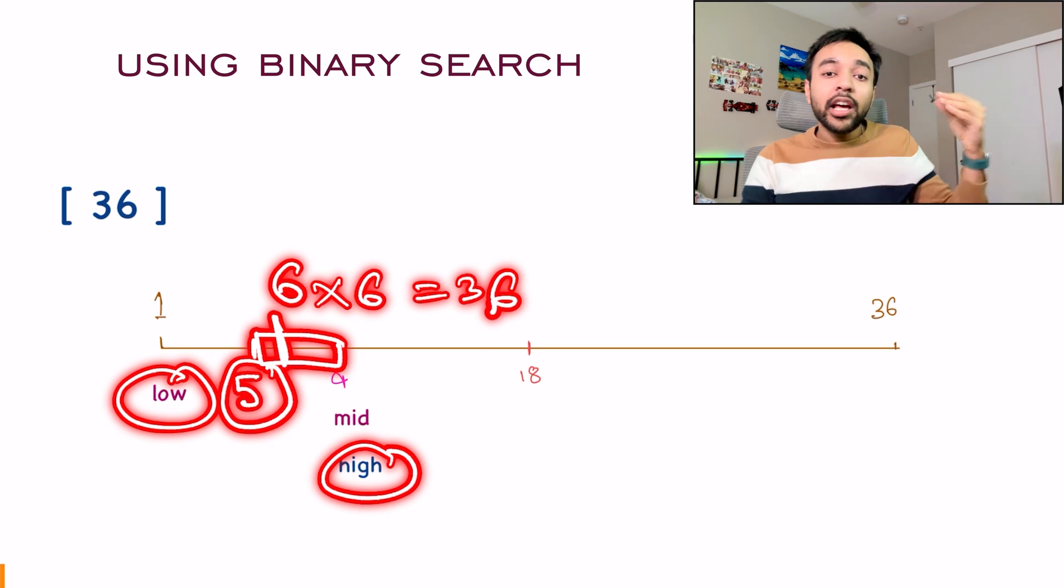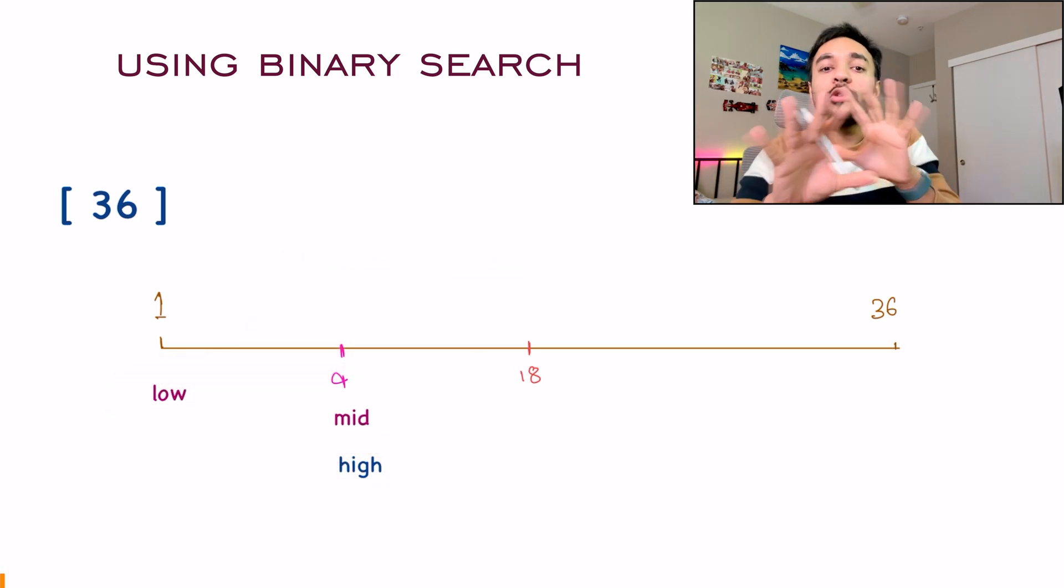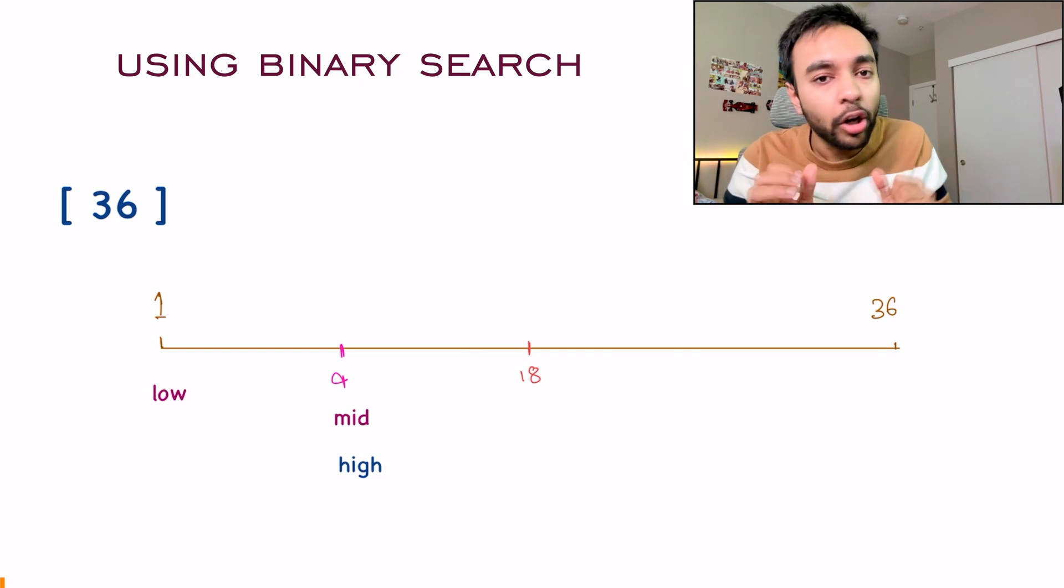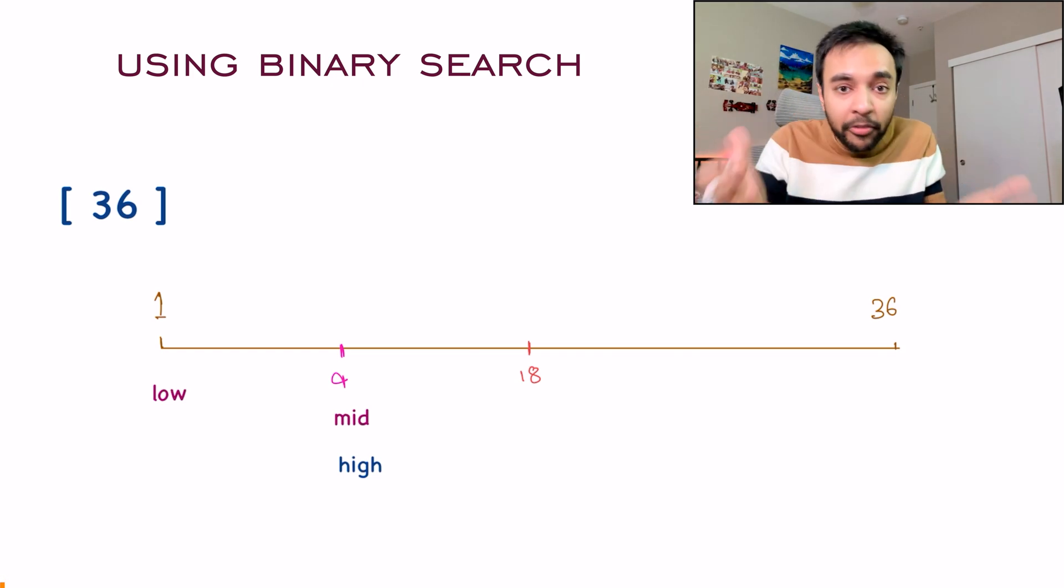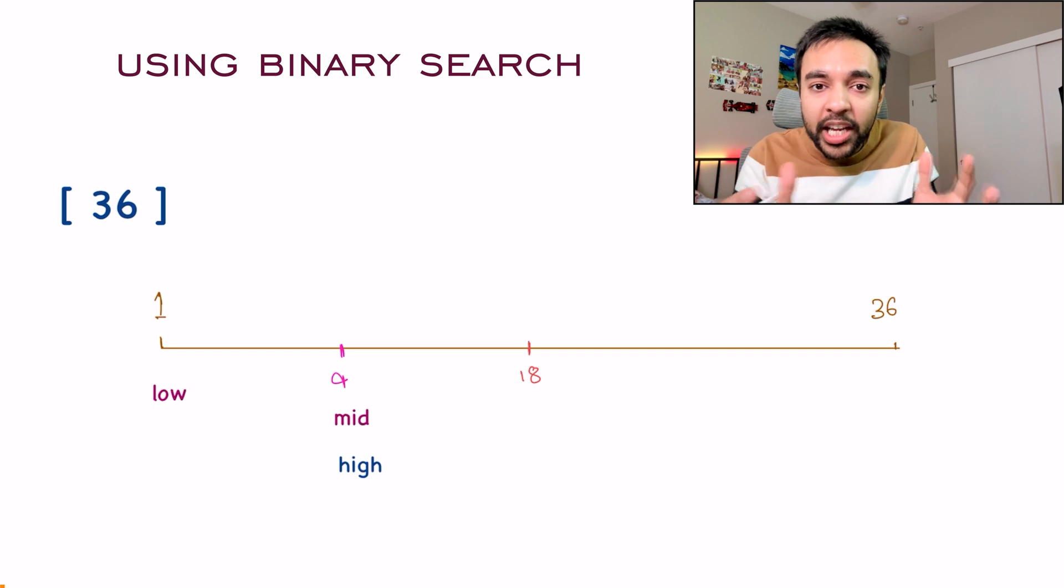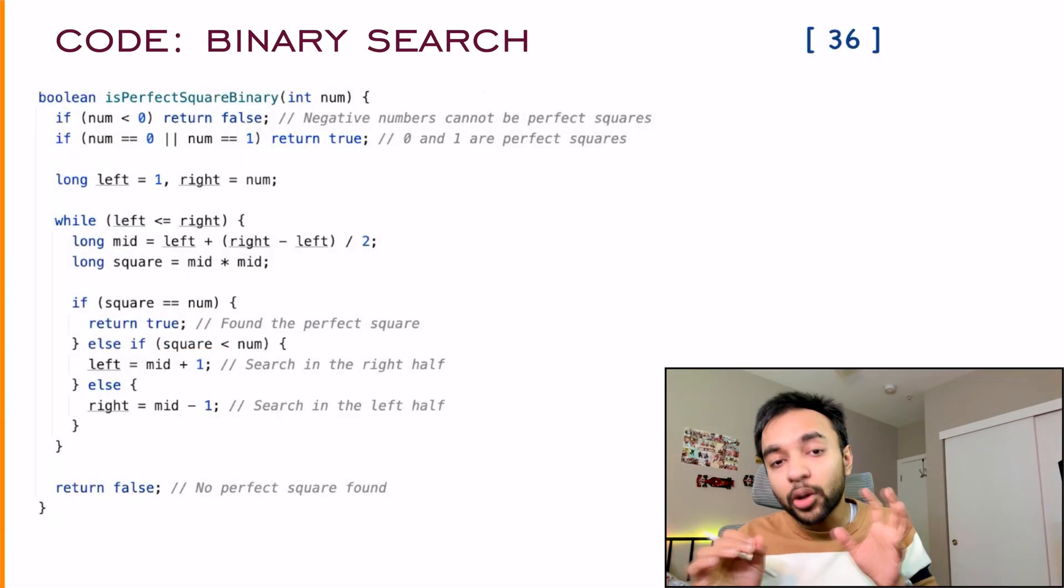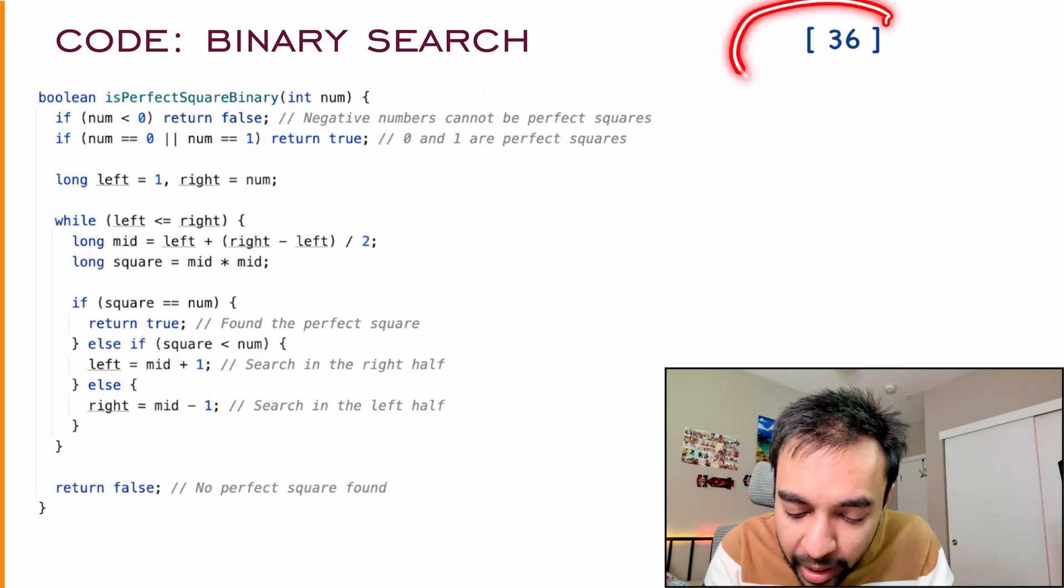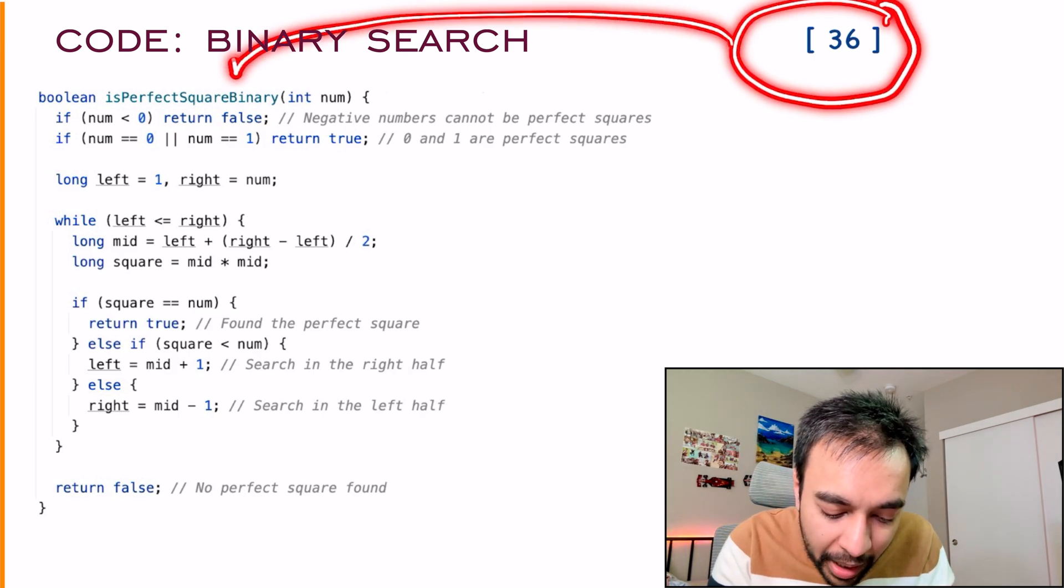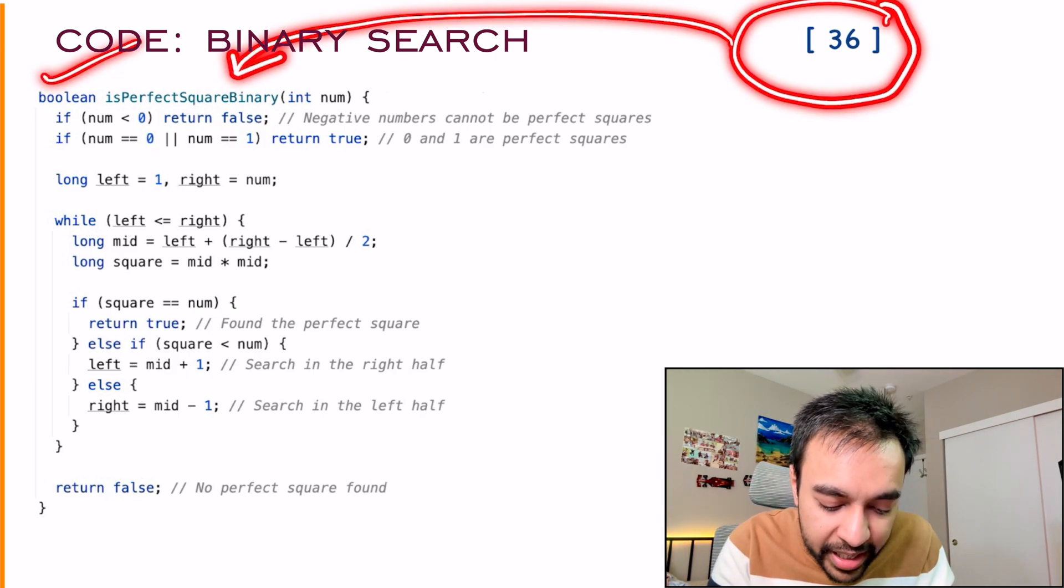If in any case, low becomes greater than high, that is where you stop. And you can see that, yes, this number was not a perfect square. So a binary search works perfectly for us and you are able to do it in order of log n time. If you want to take a look at the code for this approach, I have my number over here and it is passed in as an input parameter to the function isPerfectSquare.